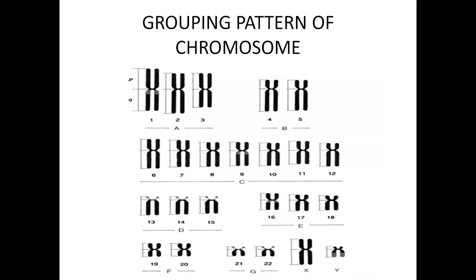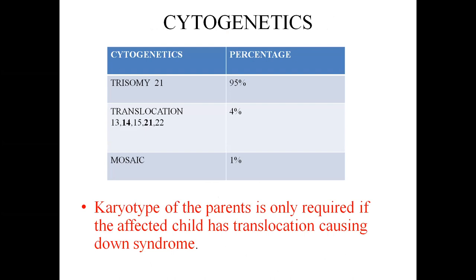Cytogenetics of Down syndrome: 95% is trisomy 21; 4% is translocation variant between D and G chromosomes (13, 14, 15, 21, 22), most common being 14-21 translocation; 1% is mosaicism. Karyotyping of parents is only required when the affected child has a translocation causing Down syndrome — if translocation is confirmed, both parents' karyotype should be done. Other aneuploidies: Edwards syndrome (trisomy 18), Patau syndrome (trisomy 13), Turner syndrome, Klinefelter syndrome. Intellectual disability in Down syndrome is always moderate, whereas in Edwards and Patau it is very severe. Incidence of Down syndrome: 1 in 800 to 1 in 1000.